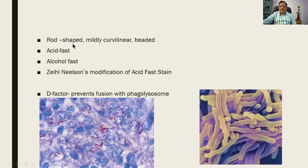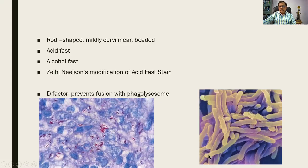It is a rod-shaped, mildly curvilinear organism which has a beaded appearance. It is acid-fast and alcohol-fast. A stain called the Ziehl-Neelsen stain, which is a modification of the acid-fast stain, will display the bacteria — pink and thin organisms. The electron microscopic picture also shows rod-shaped organisms that are slightly curved, hence the term curvilinear, with a non-uniform beaded external surface.